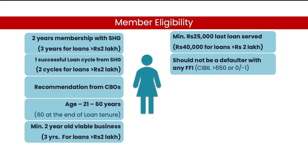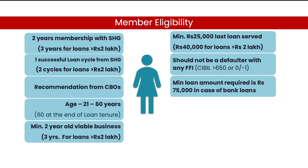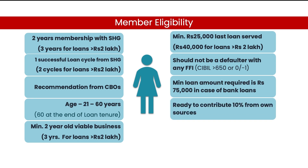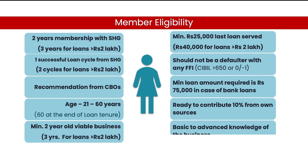7. Members should not be a defaulter and should have a CIBIL score more than 650. 8. Members should need at least Rs. 75,000 loan. 9. Members should be able to contribute at least 10% margin money from her own sources, not borrowed. 10. Members should have knowledge about her business.